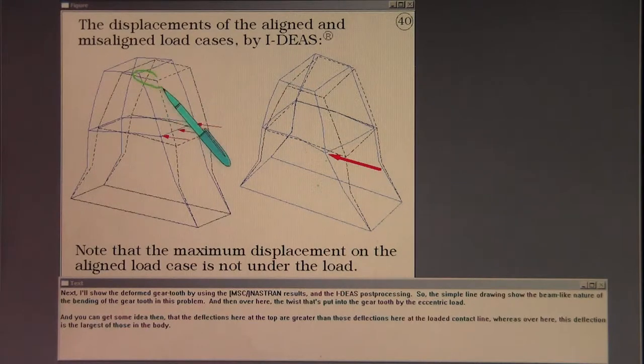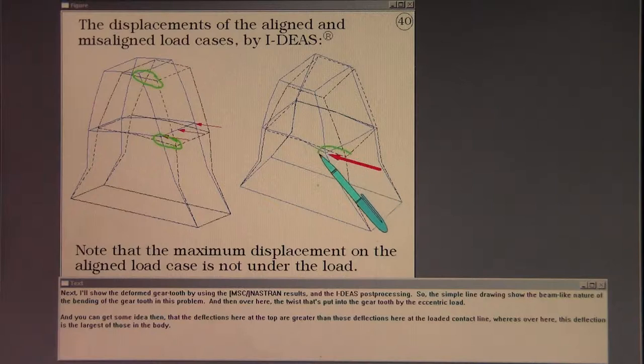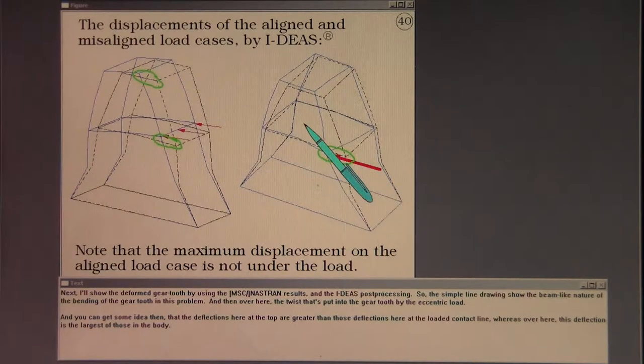Deflections here at the top are greater than those deflections here at the loaded contact line, whereas over here, this deflection is the largest of those in the body.